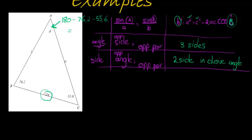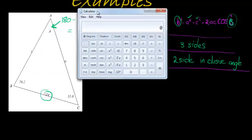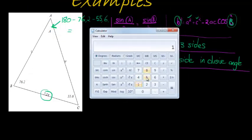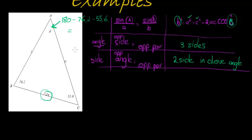This angle is simply 180 minus the other two side lengths minus 76.2 and minus 55.6. We get 180 minus 76.2 minus 55.6 gives me an answer of 48.2. That is this angle. So we already have A is 48.2.